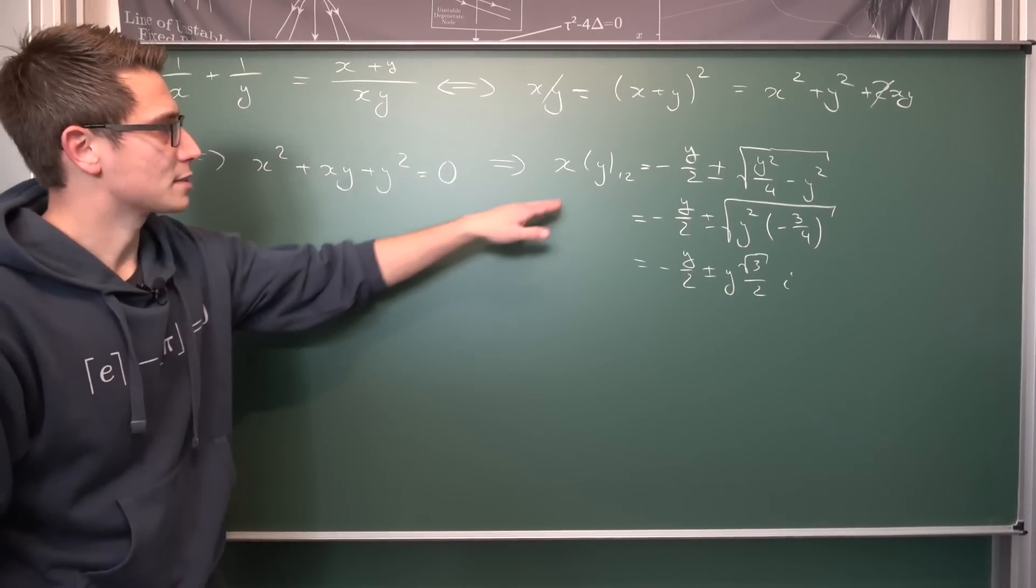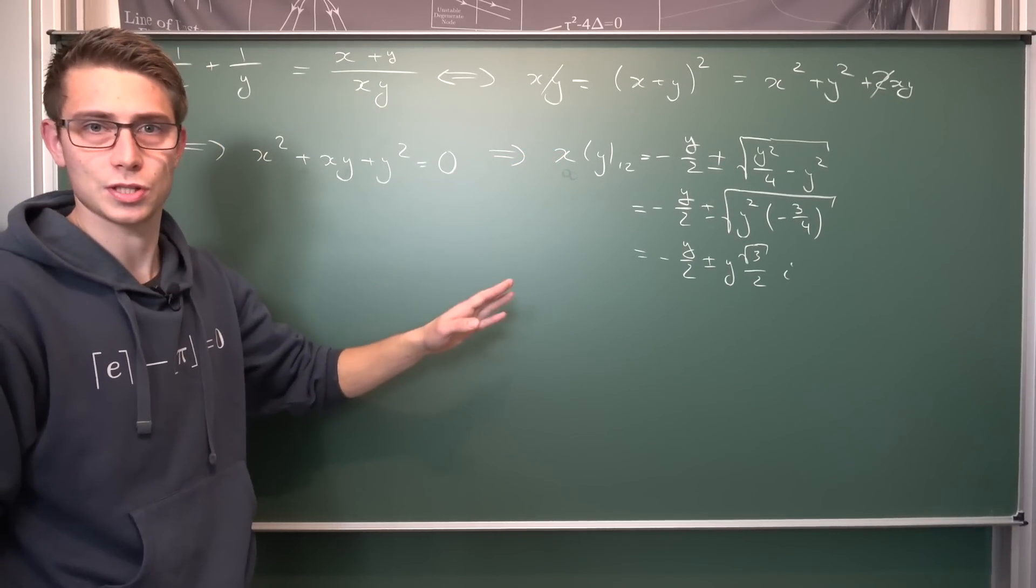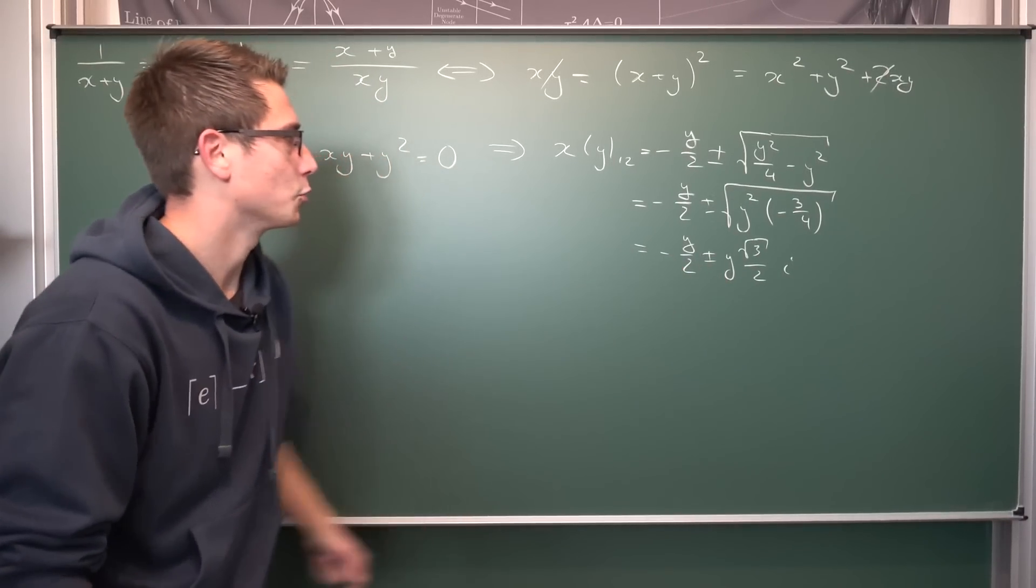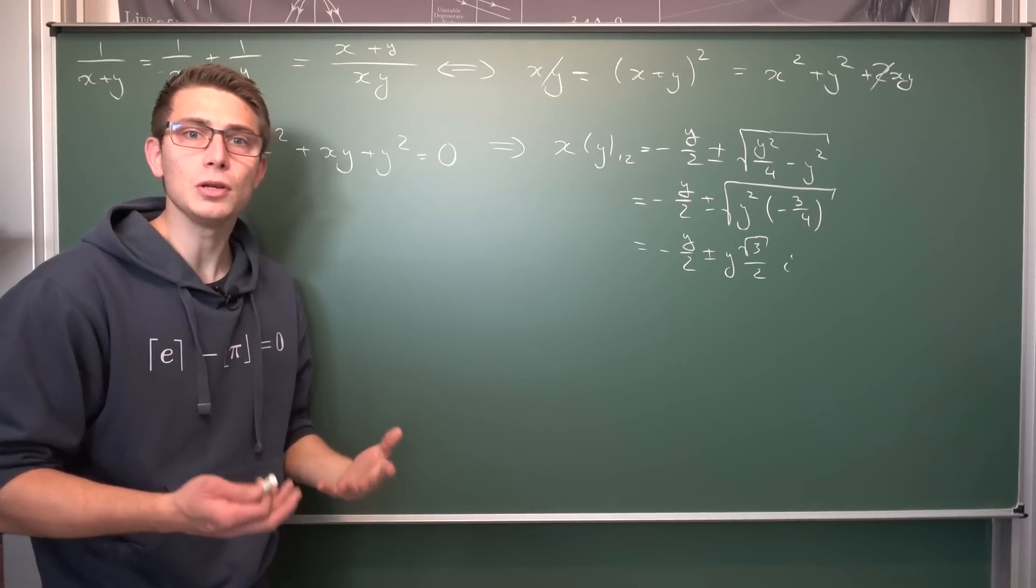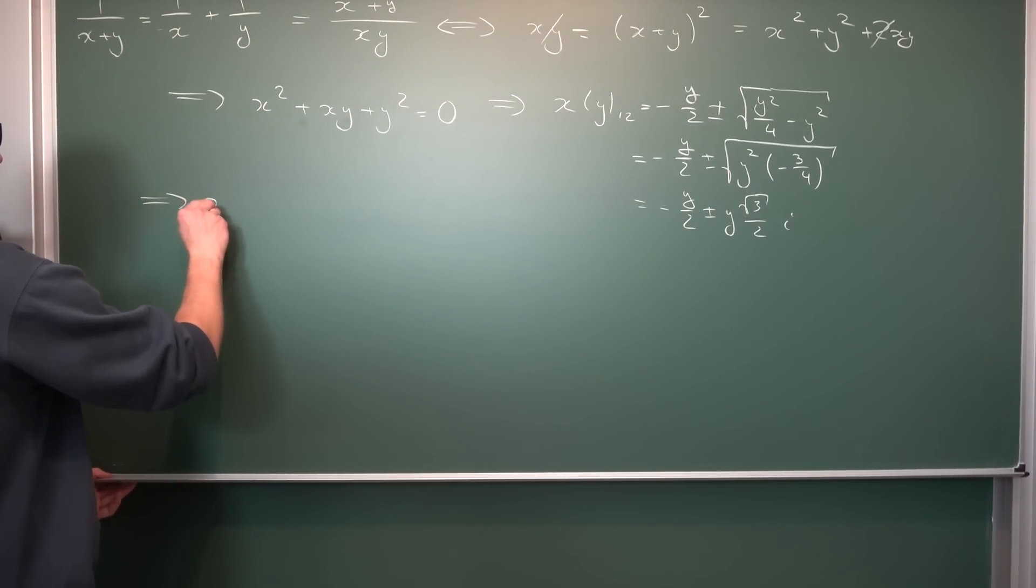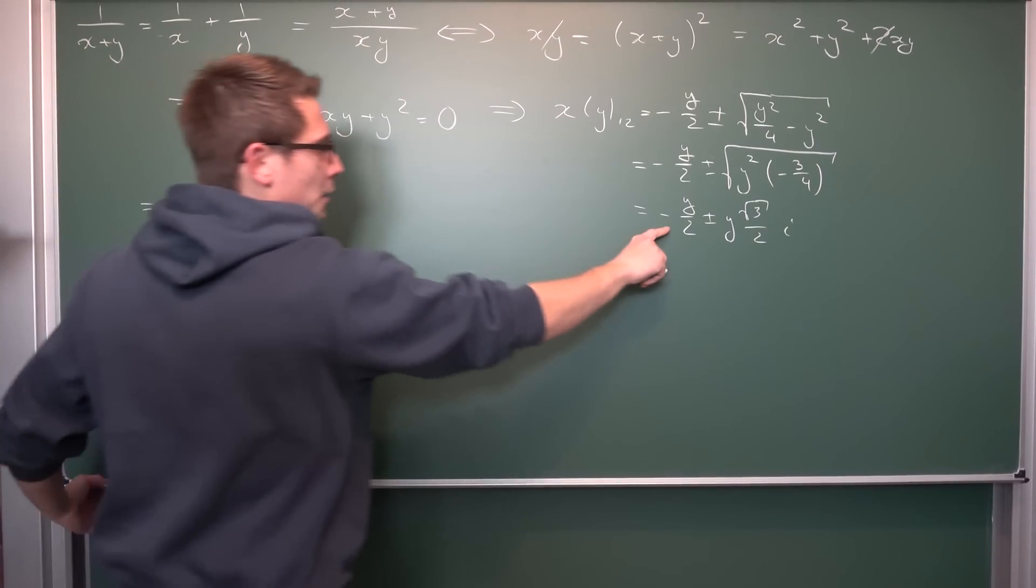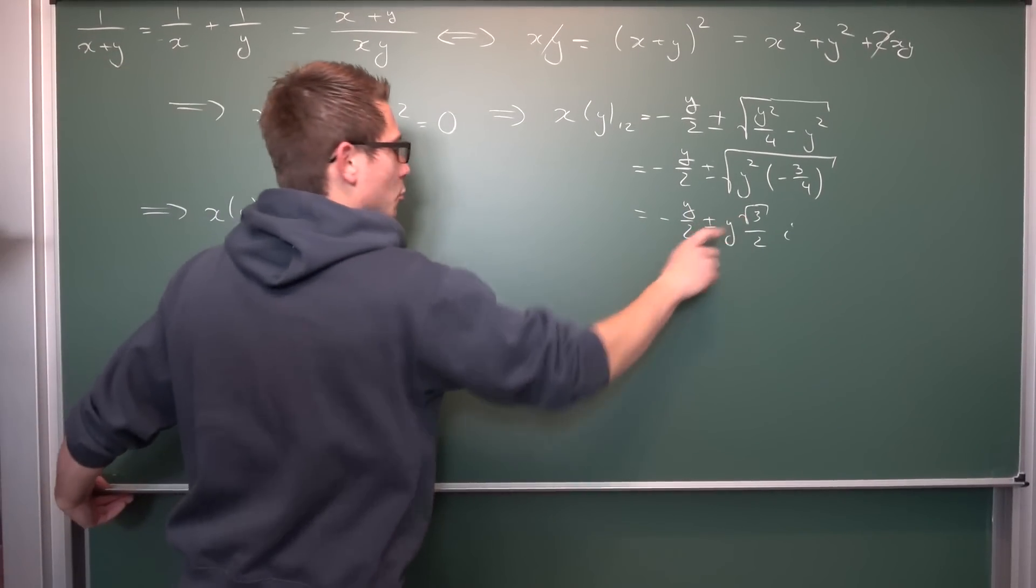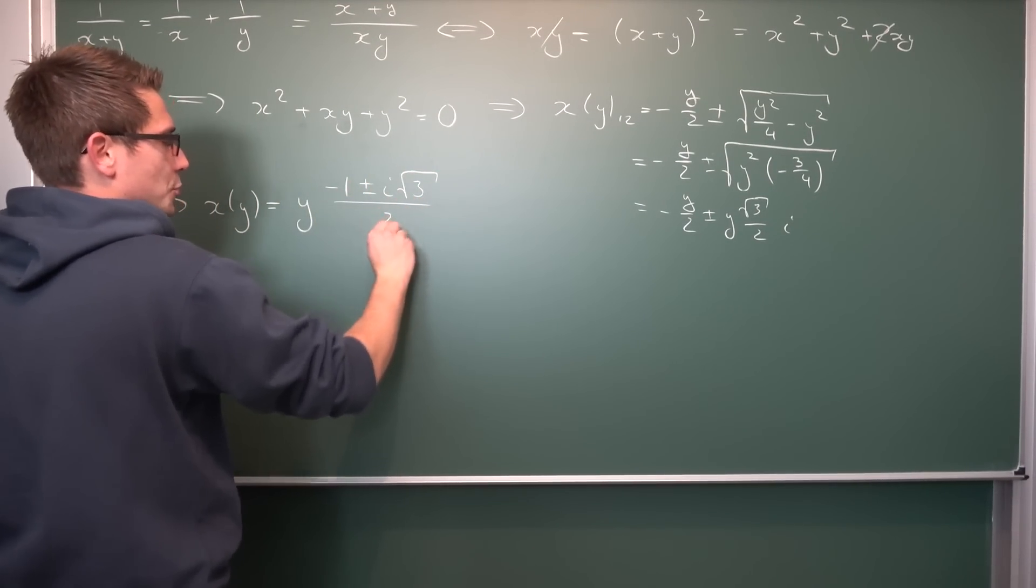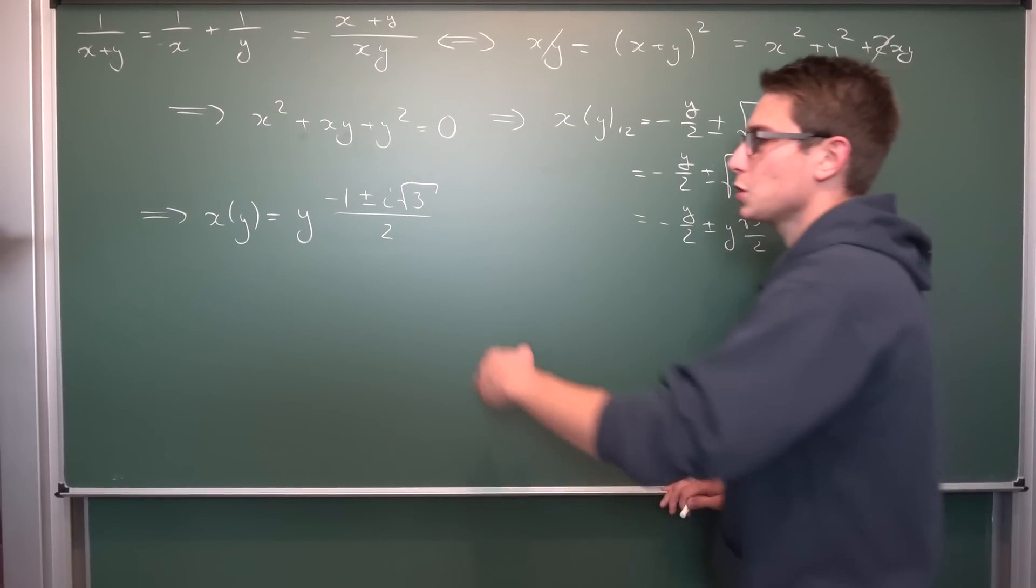So we now know, obviously, that x cannot take a real value. We don't have any real solutions whatsoever. We only have complex solutions with respect to y. And now what we can also do is we can factor out y here to get ourselves a purely complex number with a radius of y, you could say, with a magnitude of y. Meaning overall, x with respect to y can be expressed as y times negative 1 plus or minus i times the square root of 3 over 2, since we have the 1 half as a common factor. And this is cool.